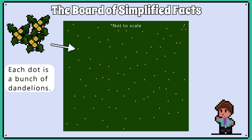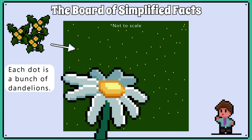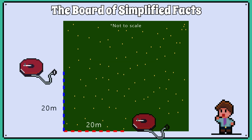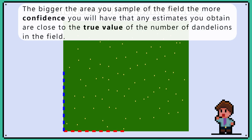Let's take a field that has dandelions growing in it and investigate their abundance. We are going to lay out two 20 metre tape measures at right angles to each other to obtain our survey area. The bigger the area you sample of the field, the more confidence you will have that any estimates you obtain are close to the true value of the number of dandelions in the field.